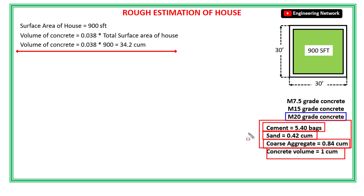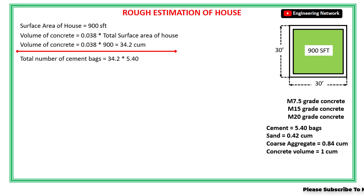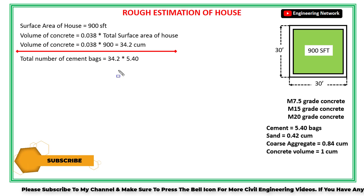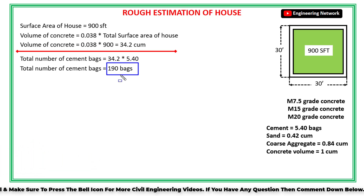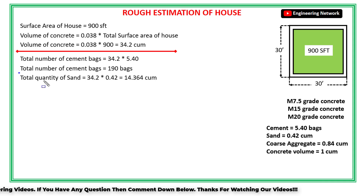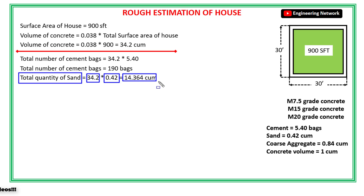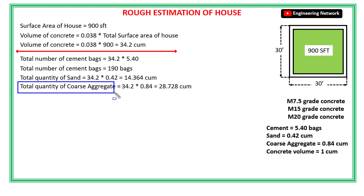So in 34.2 cubic meters of concrete, the total number of cement bags is 34.2 multiplied by 5.40, which equals 192 cement bags. The total quantity of sand is 34.2 multiplied by 0.42, which equals 14.364 cubic meters. And the total quantity of coarse aggregate is 34.2 multiplied by 0.84, which equals 28.728 cubic meters.